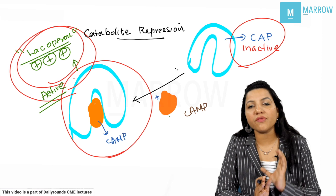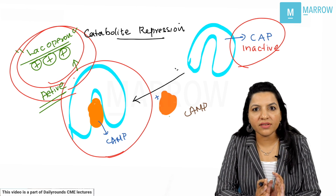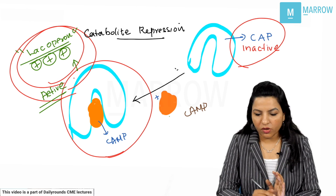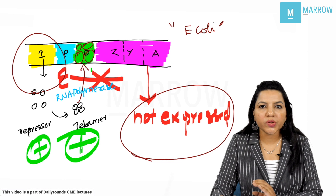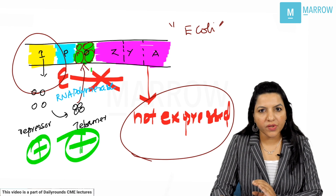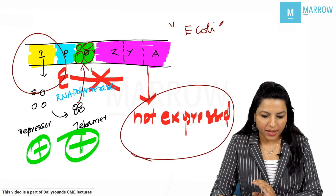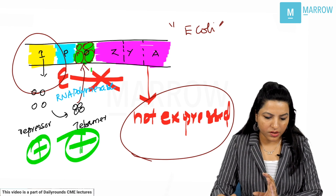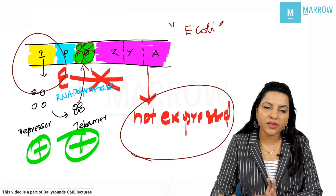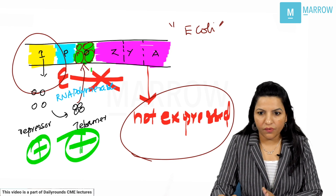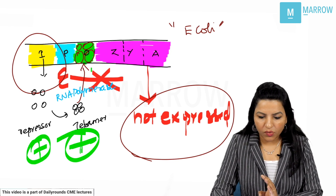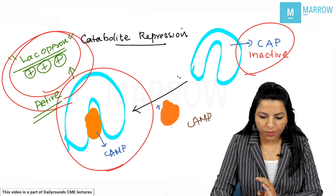So I have told you two different things. One is the concept of repressor — normally the repressor protein is always active, so normally the lac operon is switched off. The second is catabolite repression — the presence of glucose represses the lac operon by keeping CAP inactive through low cyclic AMP levels.